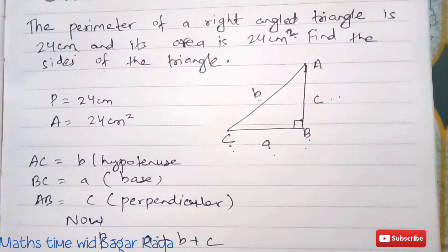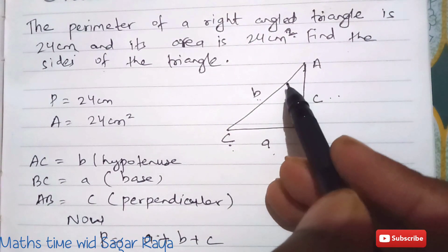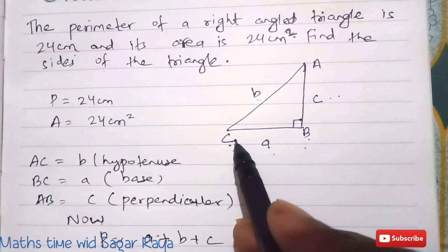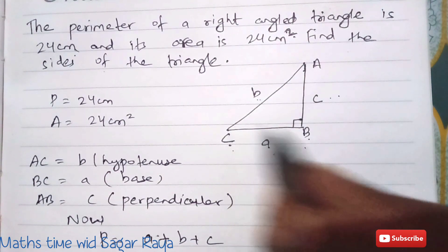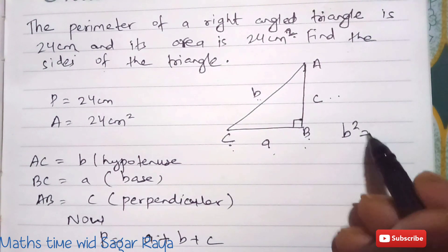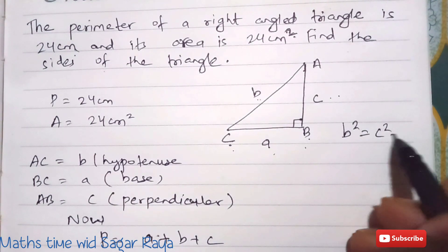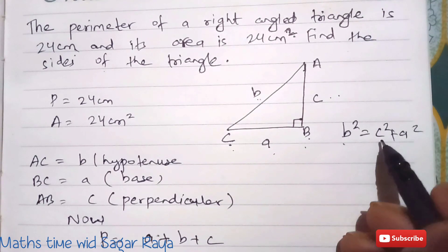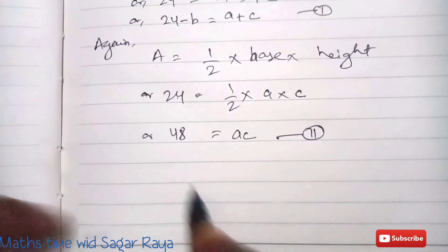Since it is a right angle triangle, by the Pythagorean theorem: h² = p² + b². Here h is the hypotenuse b, p is c, and the base is a. So we write: b² = c² + a².